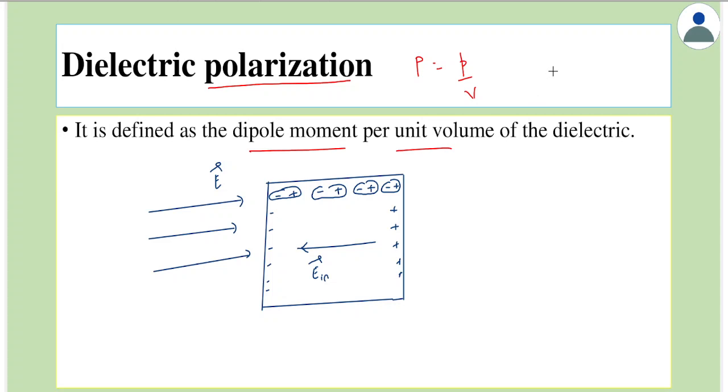Now, in case of a polar molecule, we saw that each molecule will have its own dipole moment, but net dipole moment would be such that they add up to zero. So when we apply an external electric field...